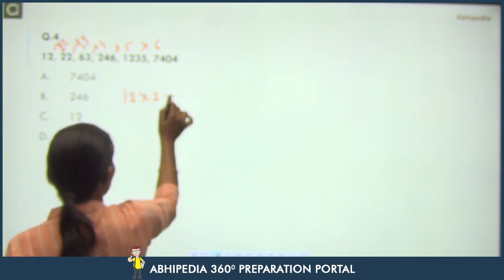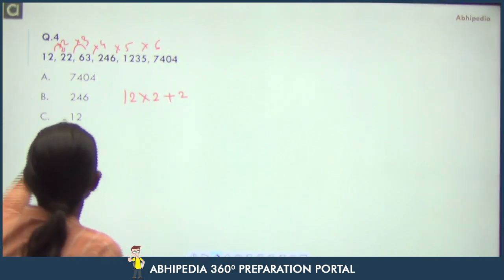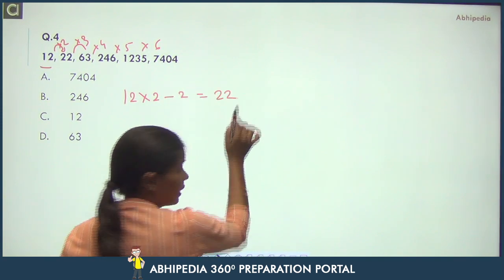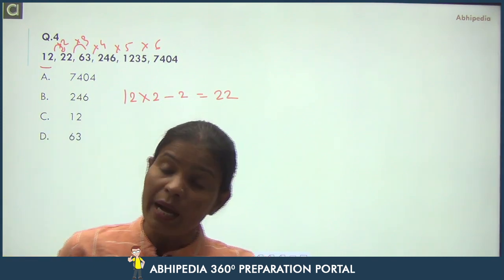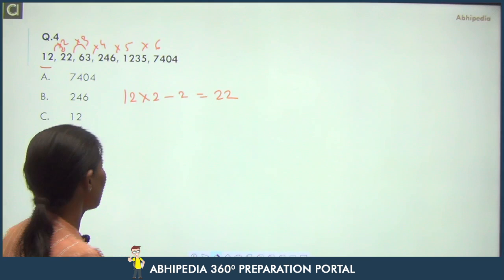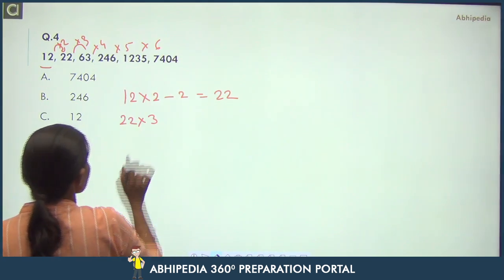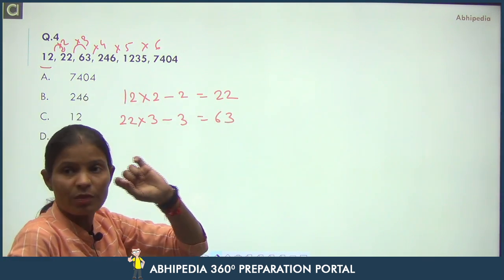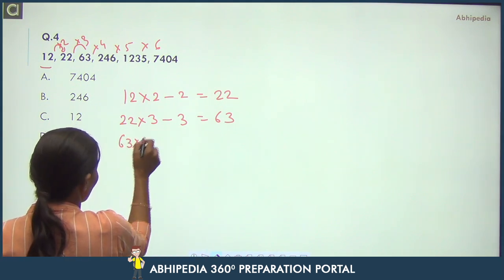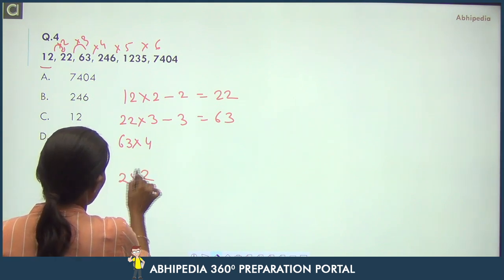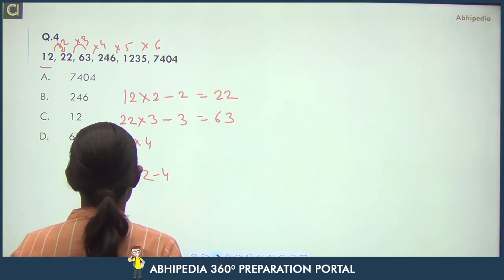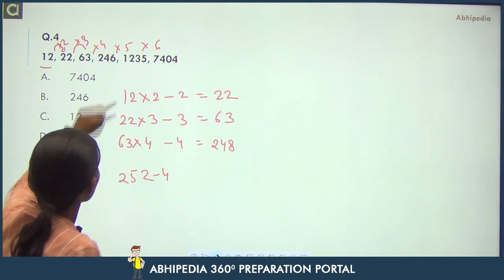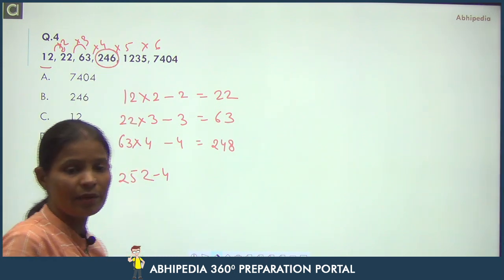Let's check: 12 × 2 − 2 = 22. Then 22 × 3 − 3 = 63. Then 63 × 4 − 4 = 248. But here it shows 246. So the pattern is: multiply by n then subtract n. Applying this: 63 × 4 = 252 − 4 = 248, but given is 246. So 246 is the wrong number.